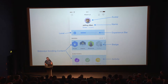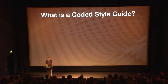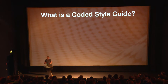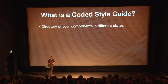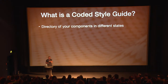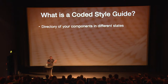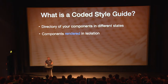Now let's talk about what a coded style guide is. A coded style guide is basically a directory of all the components you have in your app, rendered into different states. Imagine you have a button and it can have different states: a primary button, a secondary button, a disabled state, or a loading indicator. You want to have all these states rendered in isolation.